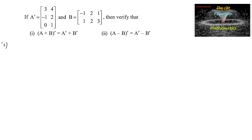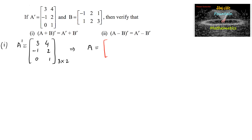Given A transpose equals [3, 4; -1, 2; 0, 1] with order 3 rows and 2 columns. The matrix A is obtained by interchanging rows and columns: the first row [3, 4] becomes the first column, second row [-1, 2] becomes the second column, and third row [0, 1] becomes the third column. So the order of matrix A changes to 2 rows and 3 columns, i.e., 2×3. This is matrix A, and matrix B is given.